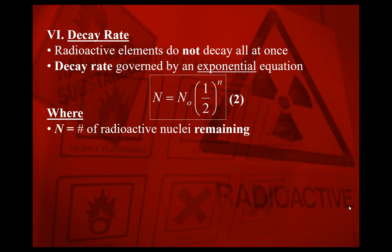In this equation, N represents the number of radioactive nuclei remaining after a specific amount of time has passed. When I say the number of radioactive nuclei that remain, that is making reference to how much of the parent isotope has not actually decayed. So N is the amount of the parent isotope that remains.